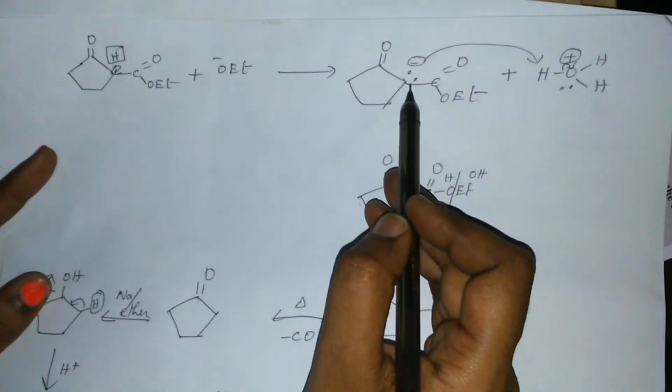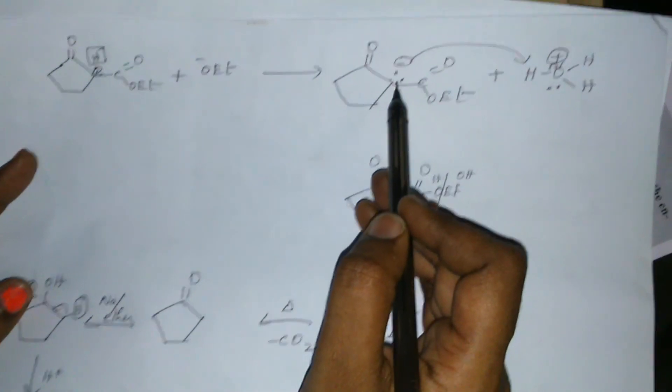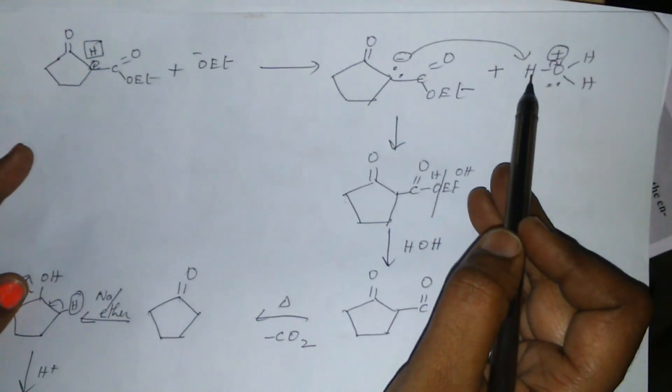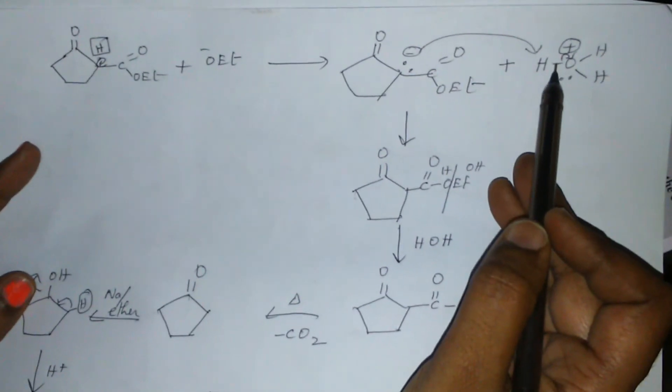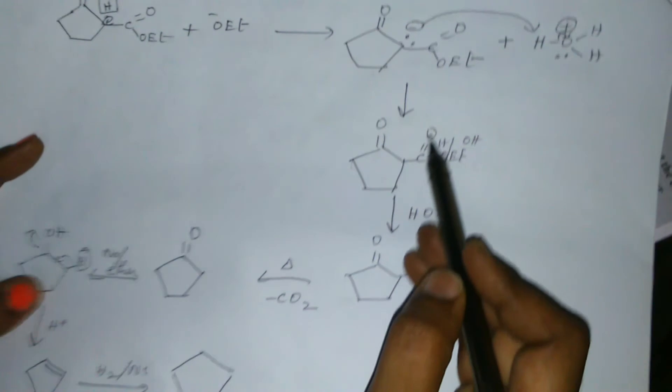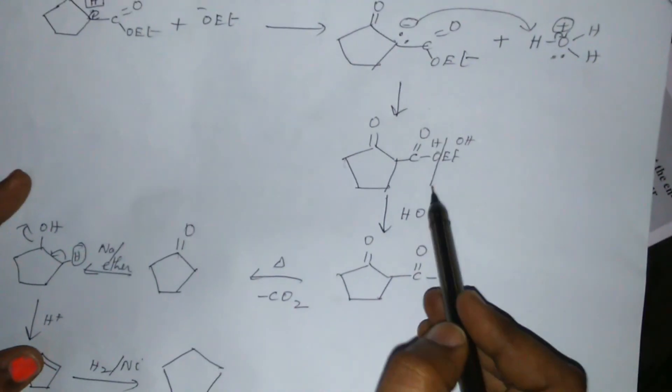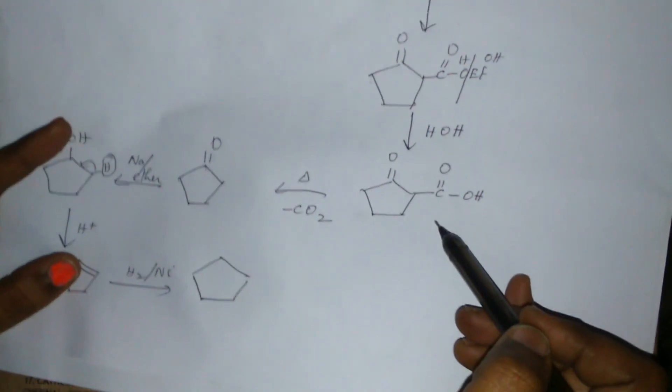Now in this stage, the liberated base O-Et removes this proton, shifting this bond pair on this carbon. Now this carbon carrying the negative charge, carbanion, is treated with hydronium ion and it takes up the proton, shifting this bond on the oxygen. Now we get a carboxylic acid derivative. This, followed by hydrolysis, gives this carboxylic acid derivative.